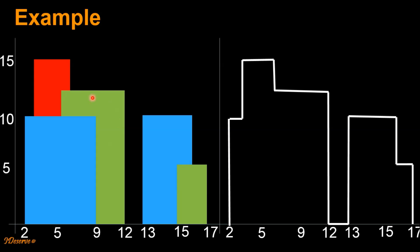Now in this slightly more complicated example, let's try to draw the skyline for this set of buildings. It will start from 2, then this part will be included, then we will go vertically, then this part, then this part is included, and finally this horizontal line segment and this vertical line segment. You can confirm that the skyline that we just drew and this skyline are the same.